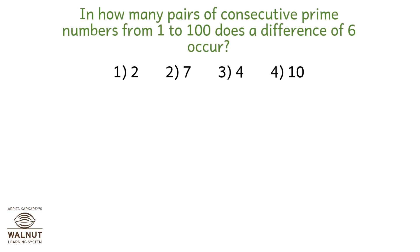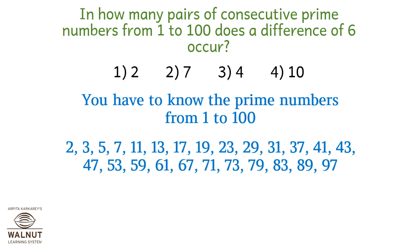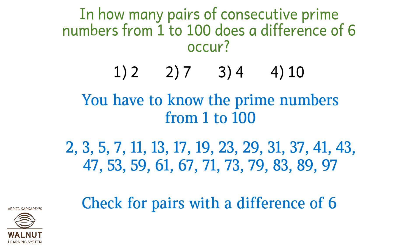In how many pairs of consecutive prime numbers from 1 to 100 does a difference of 6 occur? You have to know the prime numbers from 1 to 100: 2, 3, 5, 7, 11, 13, 17, 19, 23, 29, 31, 37, 41, 43, 47, 53, 59, 61, 67, 71, 73, 79, 83, 89, 97. Checking for pairs with a difference of 6: 23 and 29, 31 and 37, 47 and 53, 53 and 59, 61 and 67, 73 and 79, 83 and 89. That gives you 7. The answer is 7.